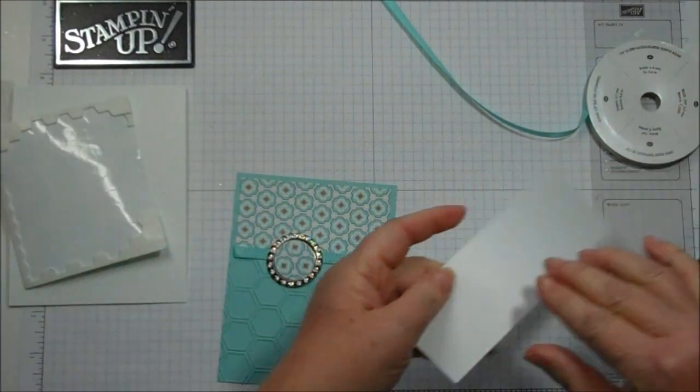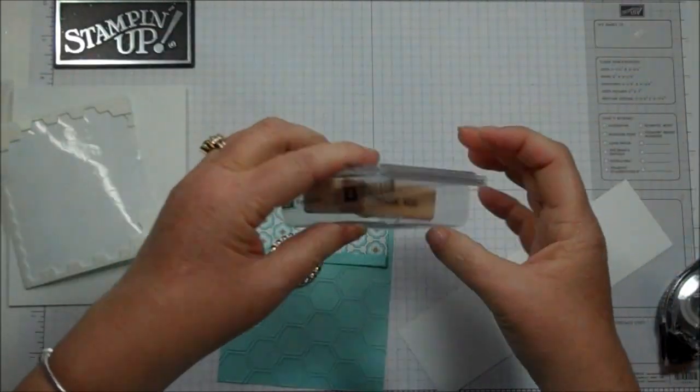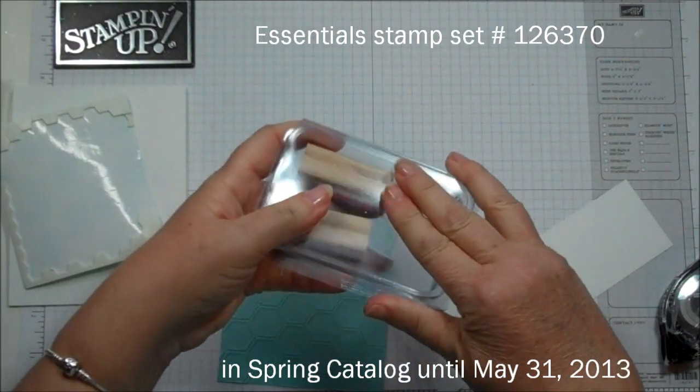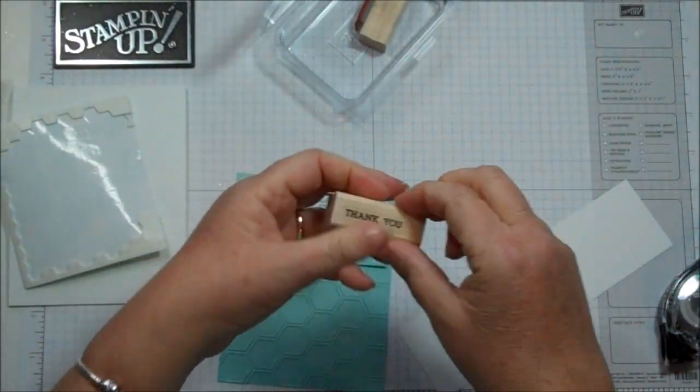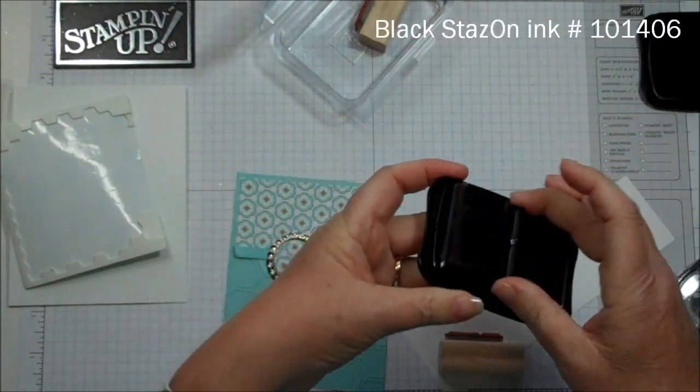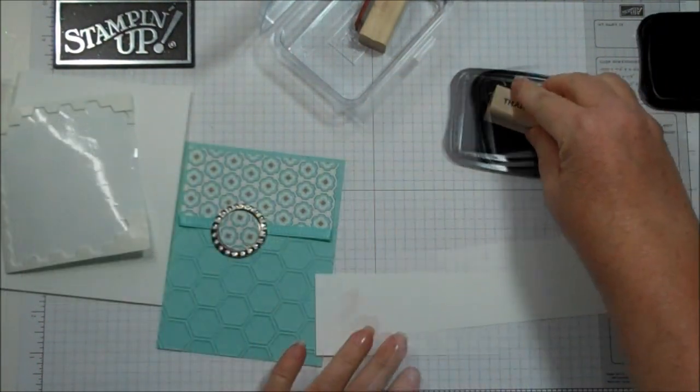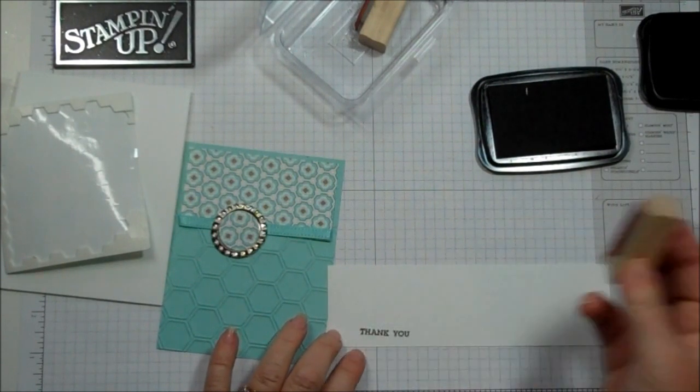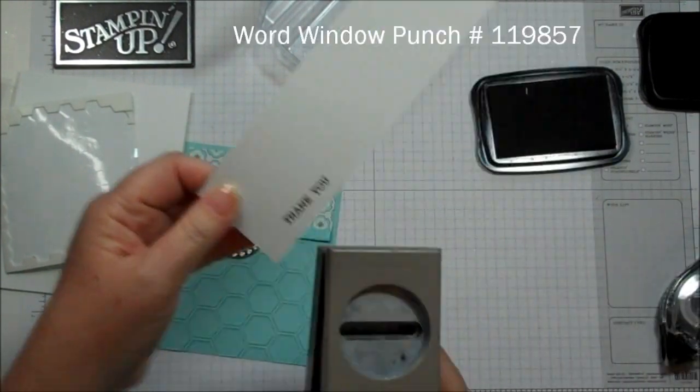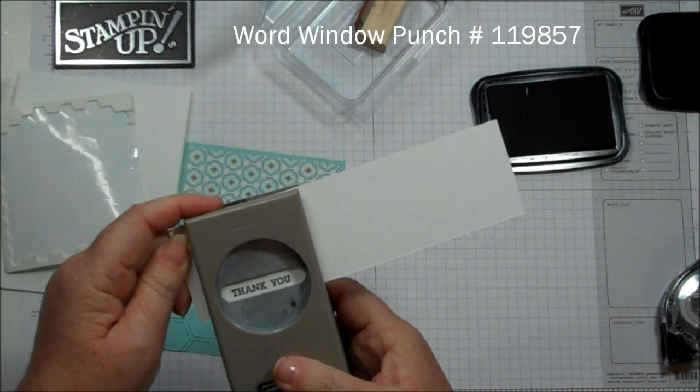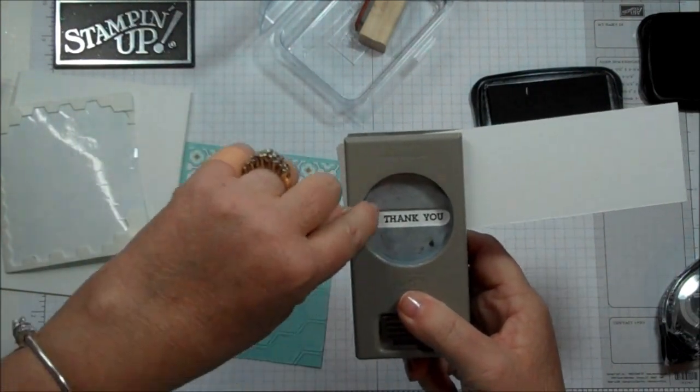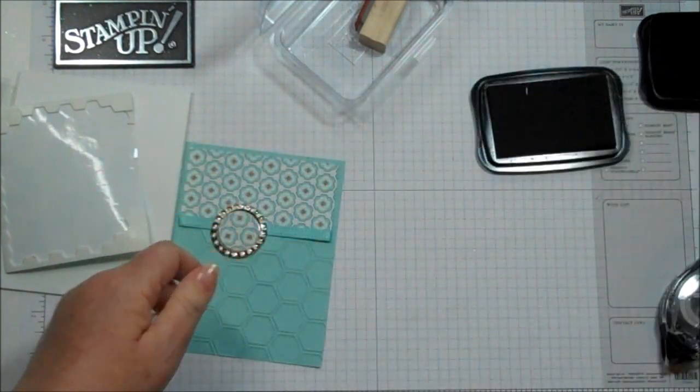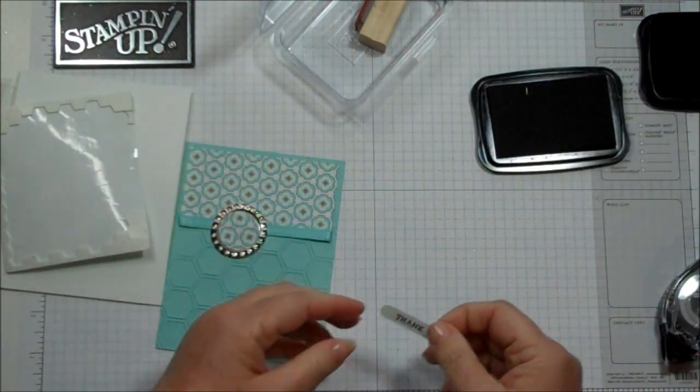Okay, we're going to do a little stamping. I got the stamp set called Essentials. And this is in the spring catalog right now. And we're going to use the little thank you. We're going to use the black Stazon. I'm going to stamp this. I'm going to take the word window punch. Punch that out. I want to actually leave a little space over to the left so we can tuck it underneath the bottle cap here.